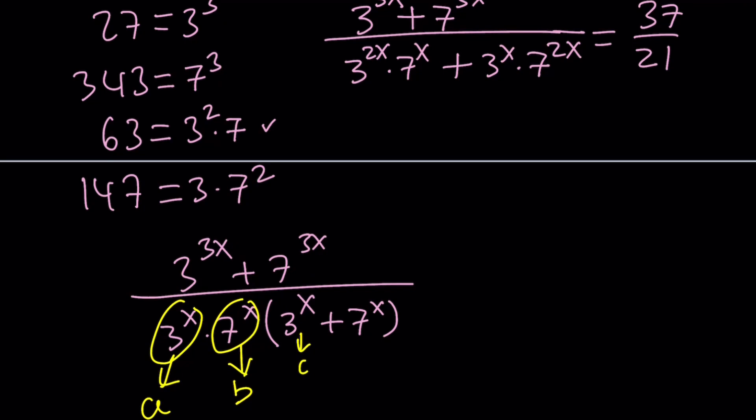This becomes a and b again. But this one is going to be, because 3^(3x) can be written as (3^x)^3, I can write it as a^3. And since 7^x equals b, then 7^(3x) is just going to be b^3.